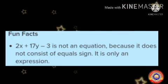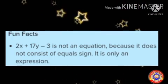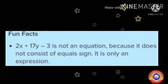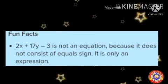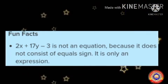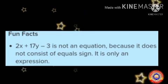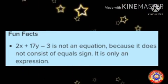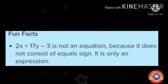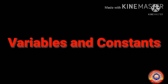Next, 2x plus 17y minus 3 is not an equation because it does not consist of an equal sign. It is only an expression. Is it clear for you children? Can you understand the difference between an expression and an equation? An equation always contains an equal sign.